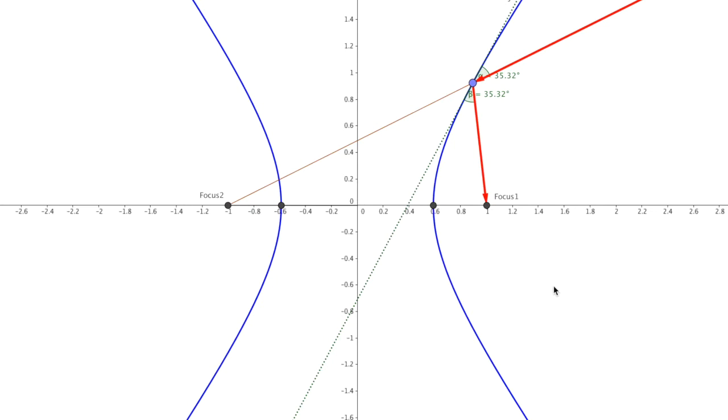One of the neat properties of hyperbolas is this: kind of like the ellipse which reflects off a wall and ends up at the other focus as long as you start at one focus.